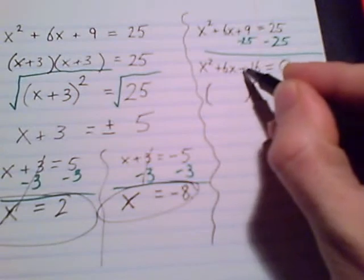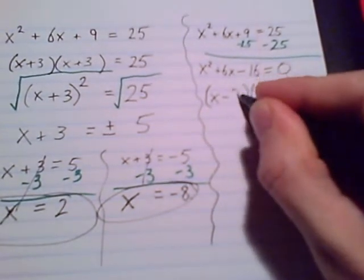All right, solve by factoring. So a pair of numbers multiplied together equals negative 16, but added together equals positive 6. All right, negative 16, positive 6, that's going to be positive 8 with negative 2. And once we have it factored, where do we go next?